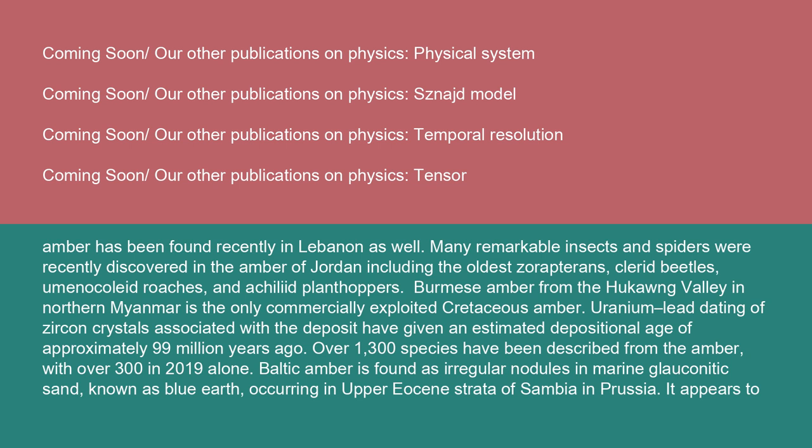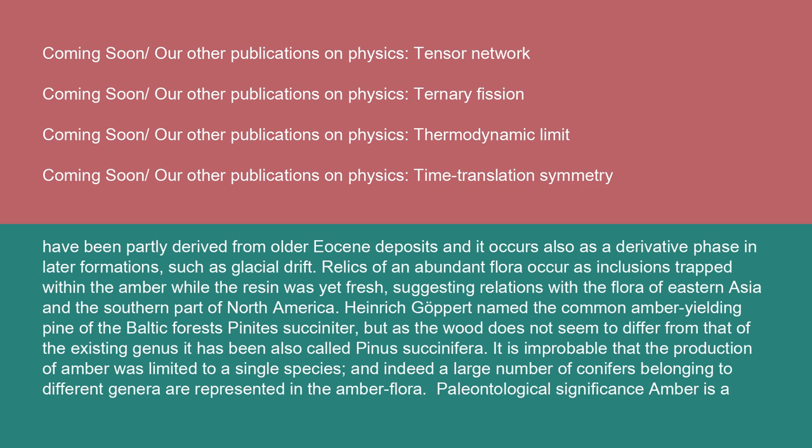Over 1,300 species have been described from the amber, with over 300 in 2019 alone. Baltic amber is found as irregular nodules in marine glauconitic sand, known as blue earth, occurring in upper Eocene strata of Sambia and Prussia. It appears to have been partly derived from older Eocene deposits, and it occurs also as a derivative phase in later formations, such as glacial drift. Relics of an abundant flora occur as inclusions trapped within the amber while the resin was yet fresh, suggesting relations with the flora of eastern Asia and the southern part of North America. Heinrich Göppert named the common amber-yielding pine of the Baltic forests Pinites succinifer, but as the wood does not seem to differ from that of the existing genus, it has been also called Pinus succinifera. It is improbable that the production of amber was limited to a single species, and indeed a large number of conifers belonging to different genera are represented in the amber flora.